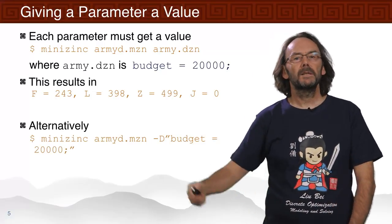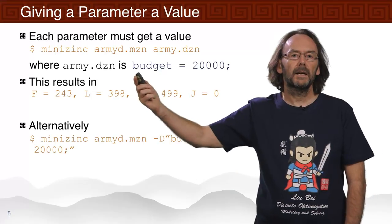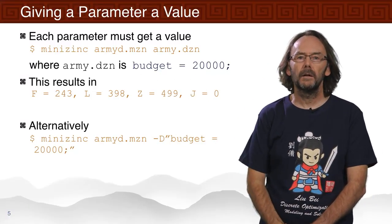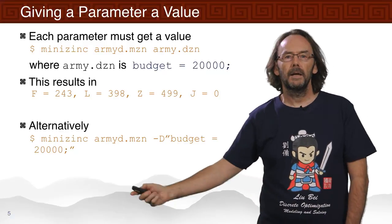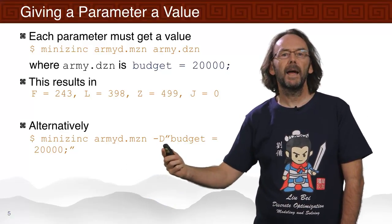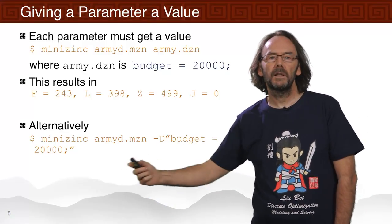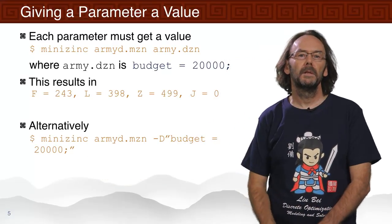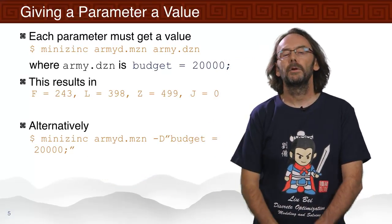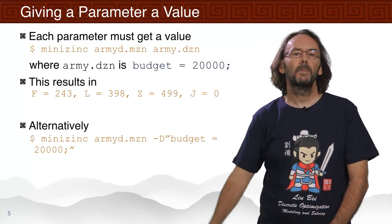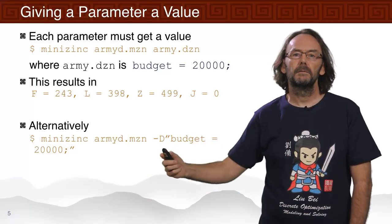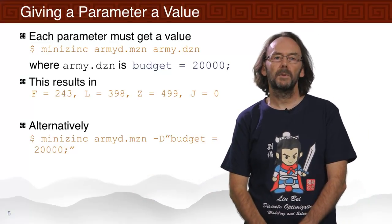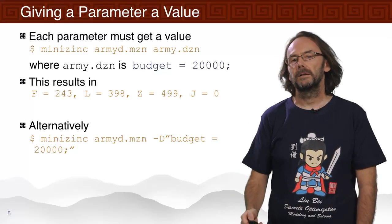Alternatively, since this data file is so small, we can put the data file on the command line using the minus-D flag. The string 'budget equals 20,000' is the data file itself. So we can run the model this way by putting the missing parameter values on the command line itself.